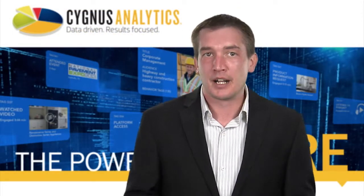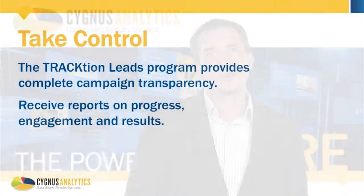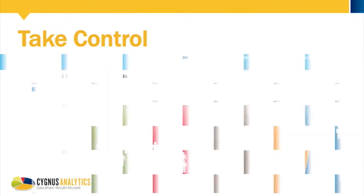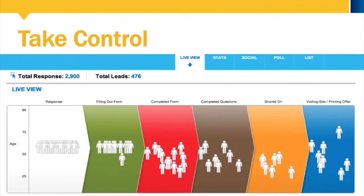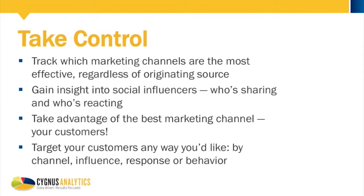And speaking of data, the Traction Leads program provides you with complete transparency of your campaign and customers. An analytics suite is available to report on progress, engagement, and results. A live view is available that monitors the progress of your campaign. To gain even further control, you can track which marketing channels are the most effective, regardless of the originating source. You can also gain insight into social influencers by understanding who's sharing and who's reacting. This allows you to leverage your best marketing channel — your customers — by incentivizing them to share the program with their friends and colleagues. Finally, you can target your customers any way you'd like: by channel, influence, response, or behavior.